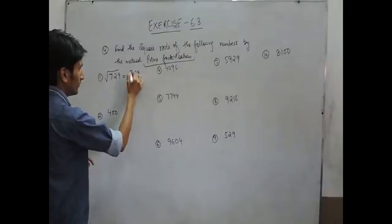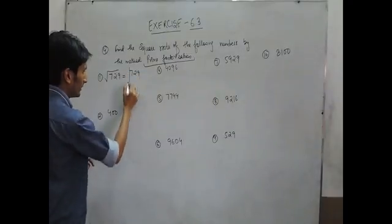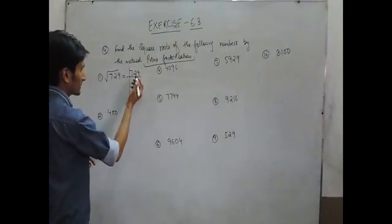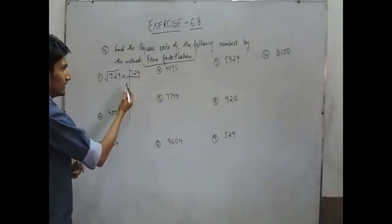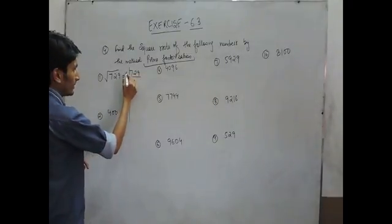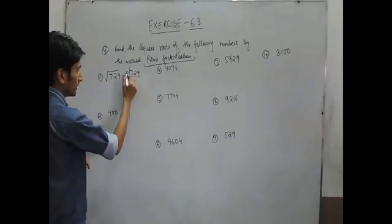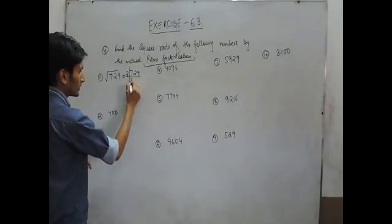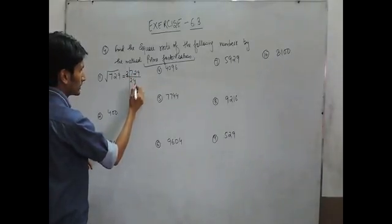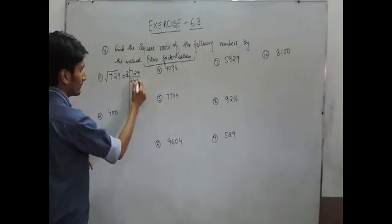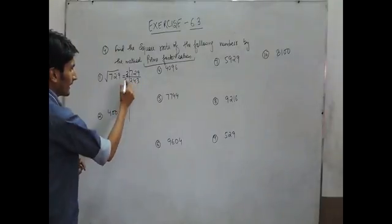Firstly, we have to find the prime factors of this number. This can be divided by 3: 3 into 3 is 9, 3 into 12 is 36. So dividing step by step, 3 goes into the number giving us successive quotients.